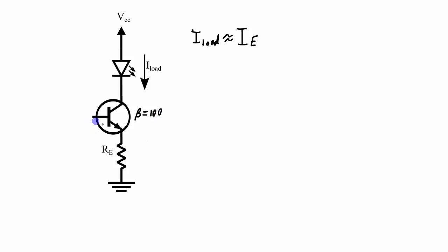The amount of current added by the base is like 1% of that overall current. We know that the emitter current is going to be whatever the voltage is at the emitter divided by whatever the emitter resistance is. So if you can set VE and RE to be particular values, or if you can choose those values, then you can design your circuit for a particular emitter current.